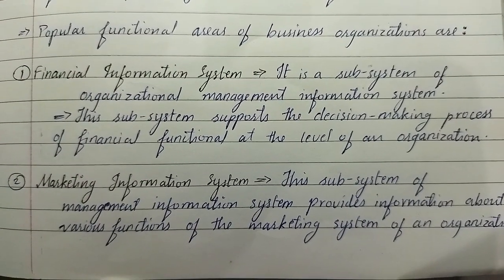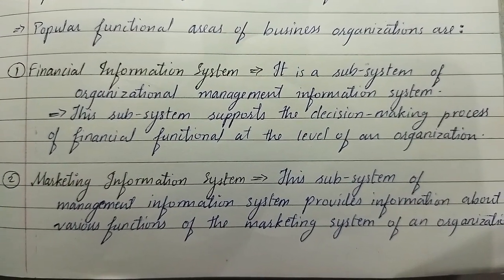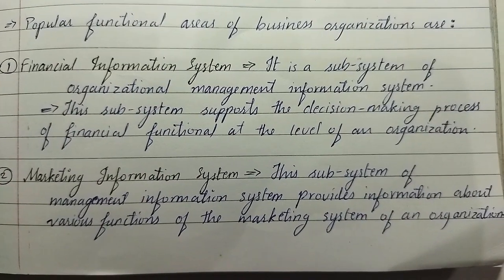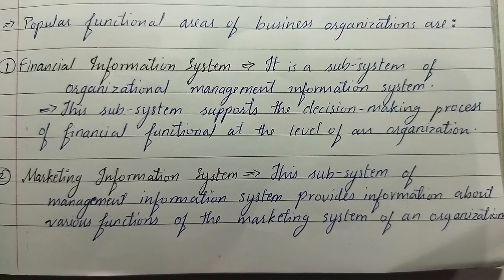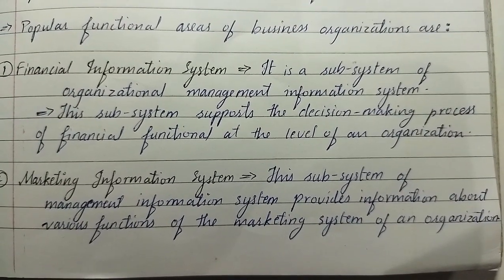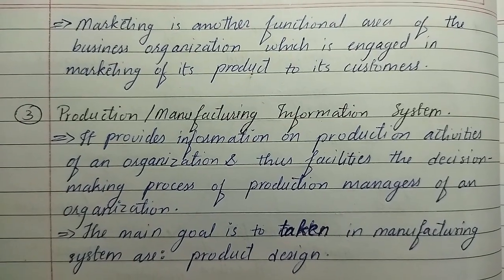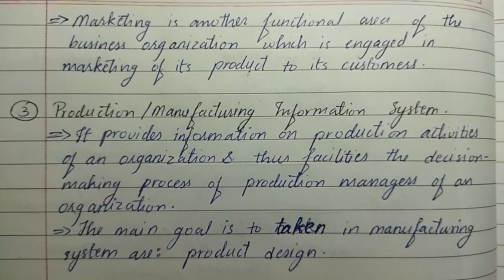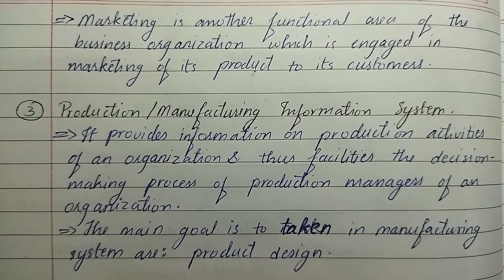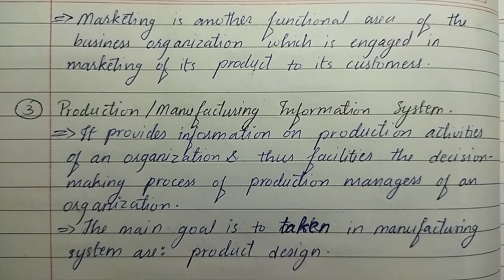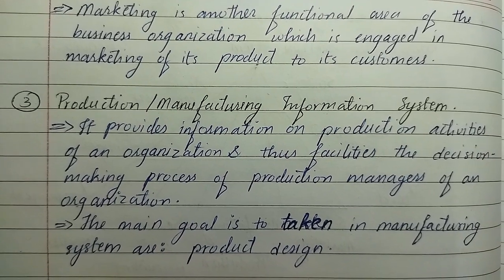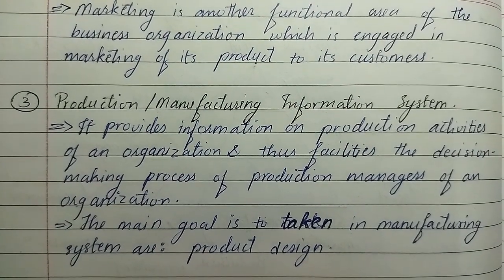The second is the marketing information system. This subsystem of the management information system provides information about various functions of the marketing system of an organization. Marketing is another functional area of the business organization, which is engaged in marketing its products to customers.